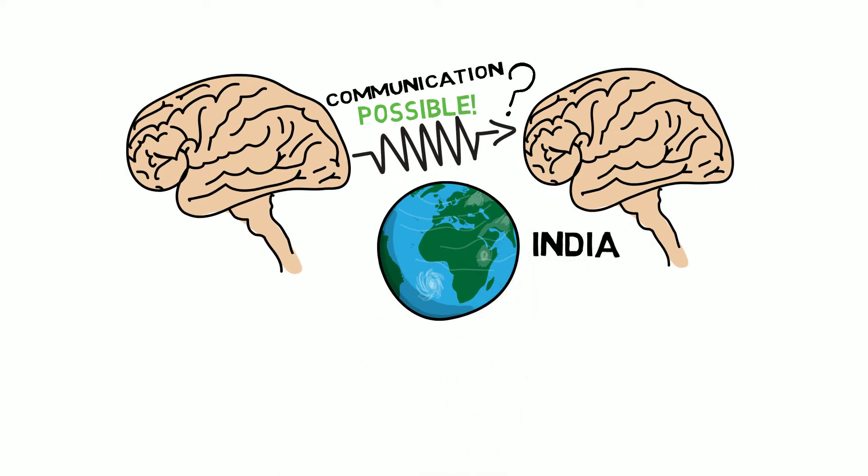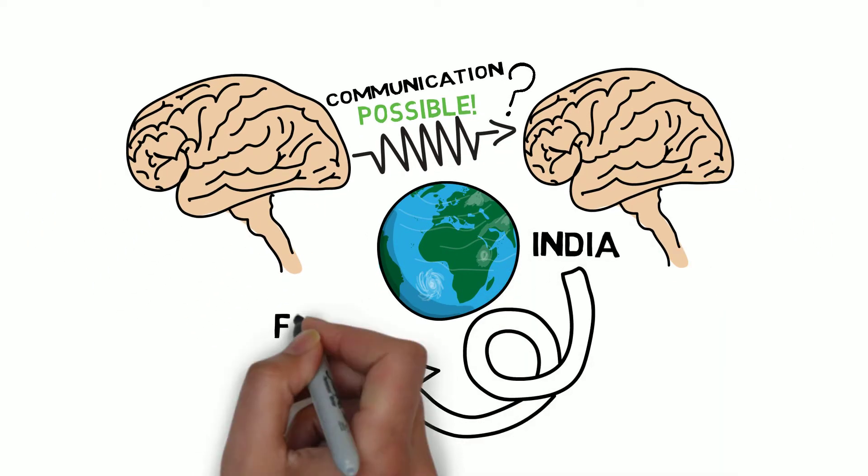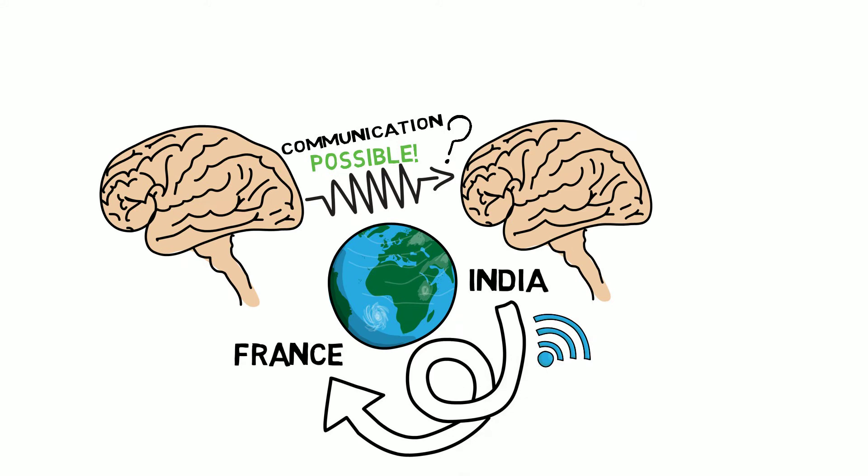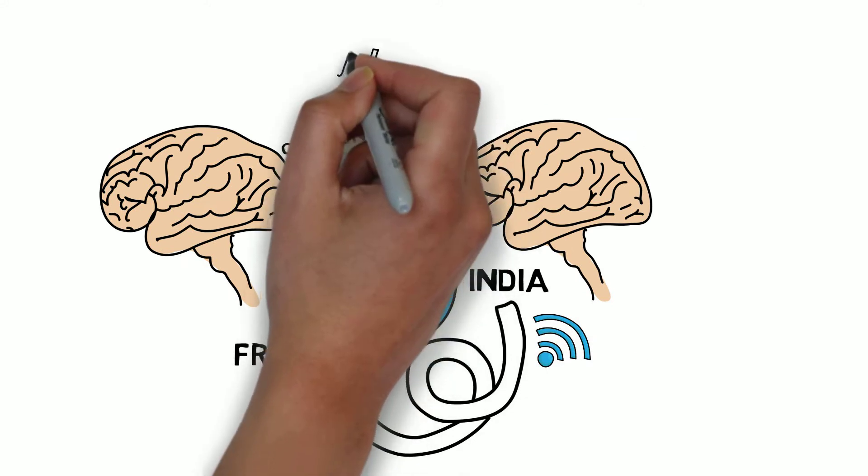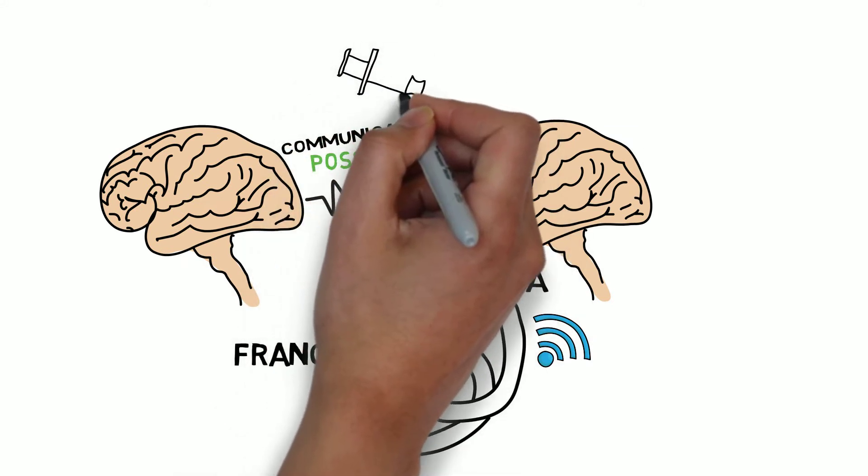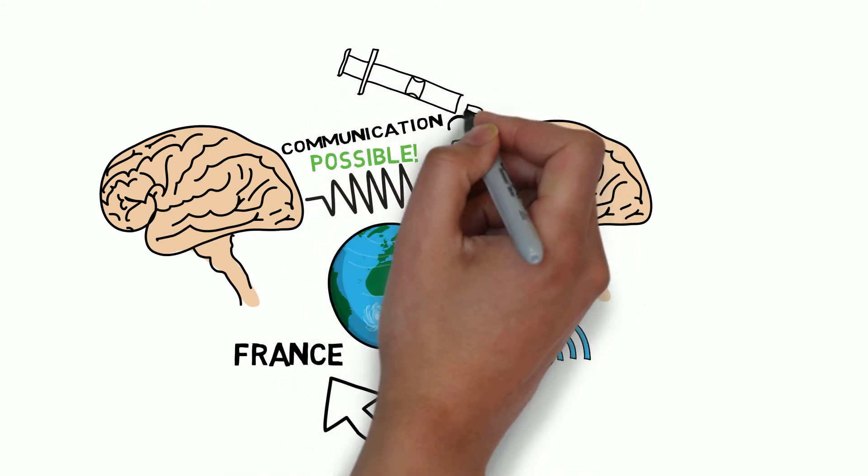Messages were sent 5,000 miles from India to France using various technologies, including the Internet. In between the emitter and the receiver was a Bluetooth device, the Internet, and navigation code.